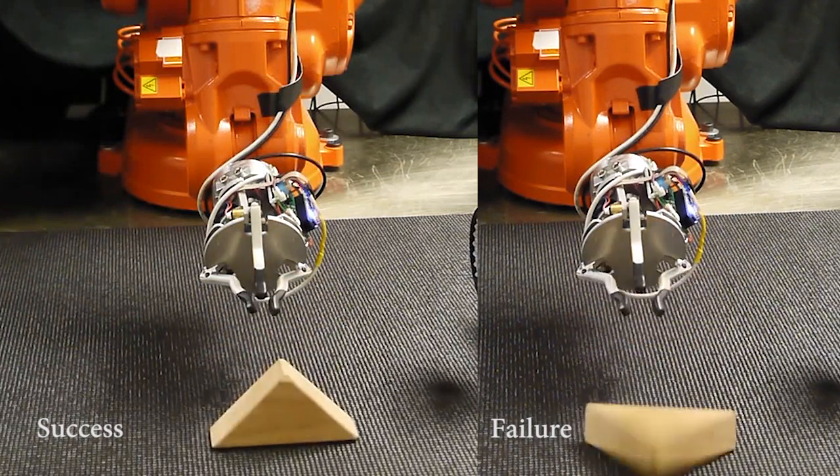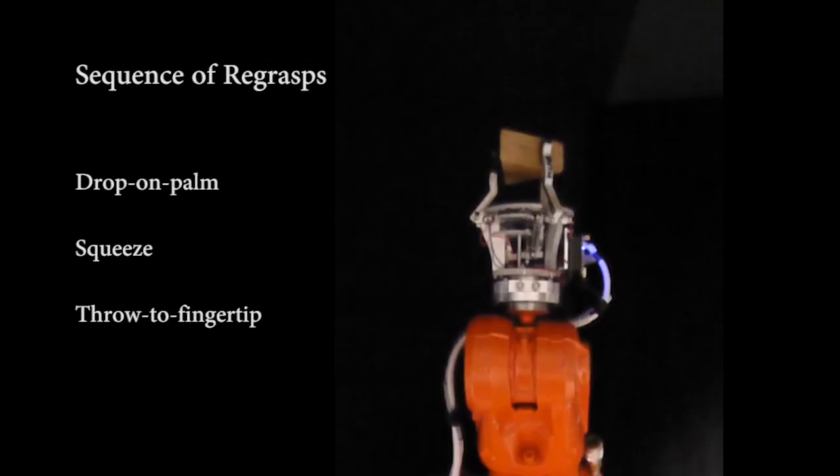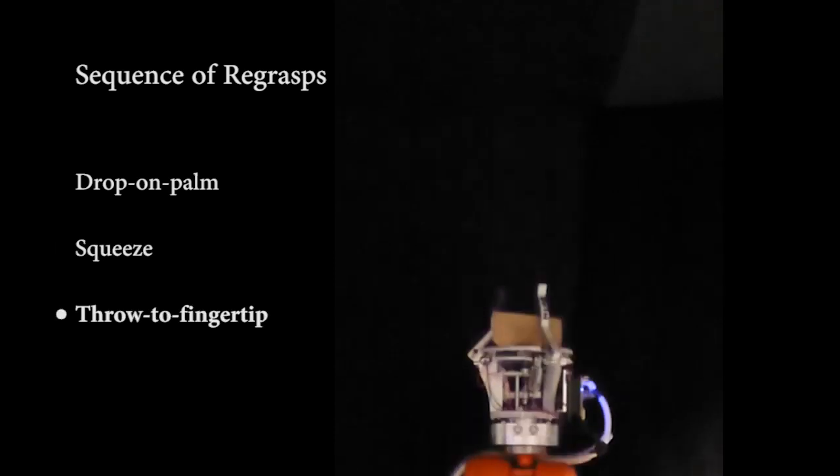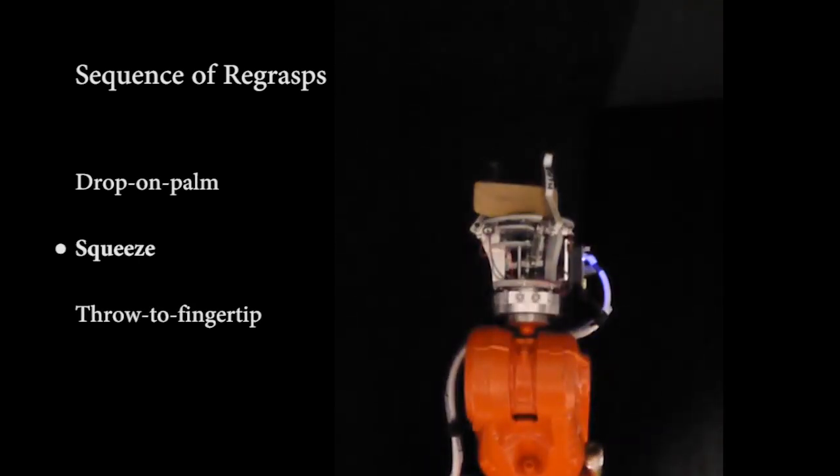However, our fully developed regrasps are much more robust and allow us to chain together several regrasps in sequence. A few of our dynamic regrasps, which transfer the object from an enveloping grasp to a fingertip grasp and back again, were shown to run in sequence 50 times in a row during our experiments.